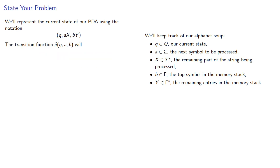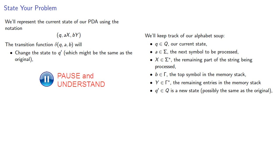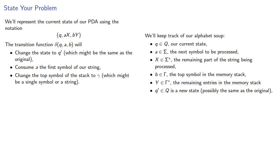Our transition function, δ(q, a, b), will change the state to q', which might be the same as the original, consume the first symbol of our string, that's gone, and change the top symbol of the stack to γ, which might be a single symbol or a string, and so our new state will be (q', x, γγ).